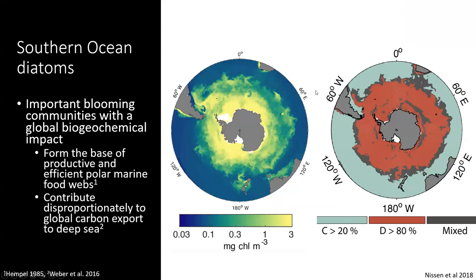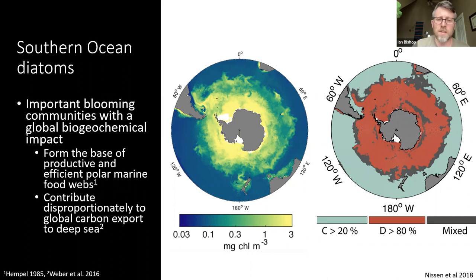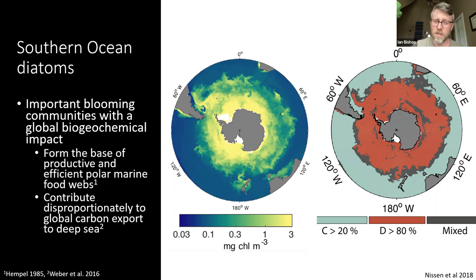For those of you who don't know, Southern Ocean diatoms are important blooming communities with a really large global biogeochemical impact. They form the base of productive and efficient marine polar food webs and contribute disproportionately to global carbon export to the deep sea. On the left, a total chlorophyll map for the Southern Ocean austral summer gives a sense of what that bloom looks like — it's circumpolar and increasingly strong toward the coastal continental areas.